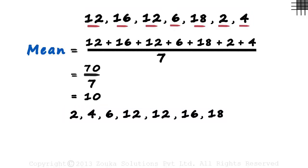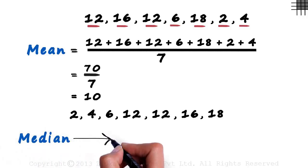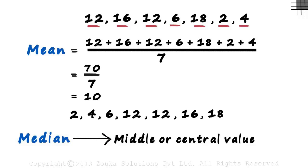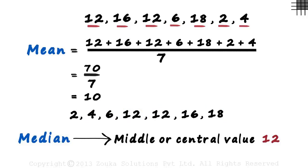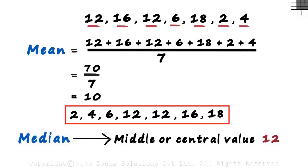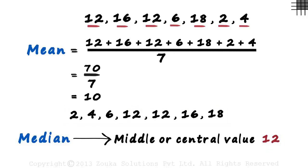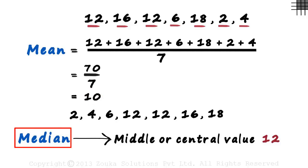Arranging it in ascending order gives us something called the median. The median is the middle value of the list when it's arranged in ascending order. There are 7 values here, and we can see that 12 is the middle value. So the median of this set of values is 12. The median is just another way to measure the central tendency. So the mean is the average and the median is the middle value, but only after we have arranged the terms in ascending order.